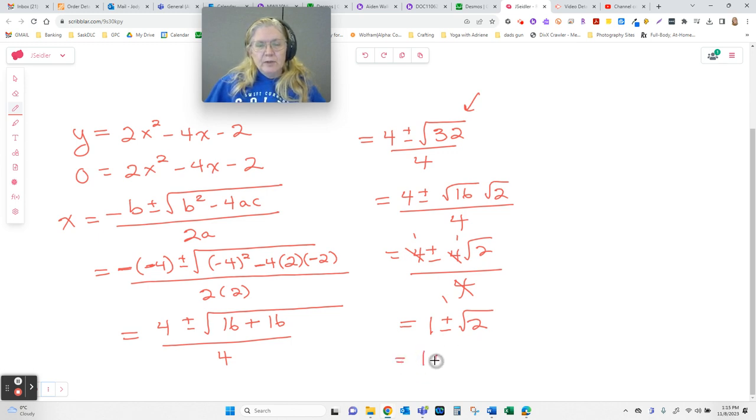actually punch in 1 plus the square root of 2 on your calculator. Which is 2.414. Punch in 1 minus root 2, which is negative 0.414. There are the two solutions to this equation, x-intercepts to this function. I'm going to end this video, and in the next one I'll talk about the discriminant.